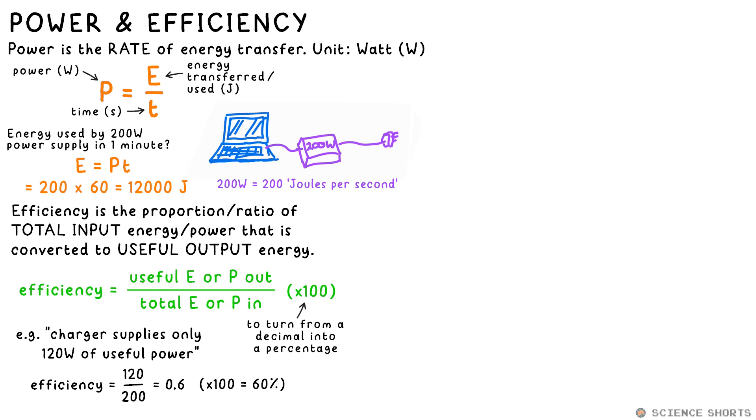If we multiply that by 100, we turn it into a percentage. That means it's 60% efficient. That means that 40% of the power or energy going in is wasted, and it's usually as heat lost to the surroundings.